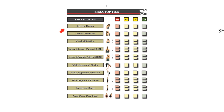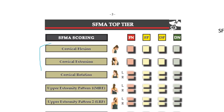The first three movements focus on the cervical spine and are all assessed in a standing position. Starting with cervical flexion: the patient stands with feet together and jaw clenched, and is asked to take their chin down to their chest. Next, they look up toward the ceiling for cervical extension. Then they turn to the left and to the right for cervical rotation. All three are graded for pain and overall movement.